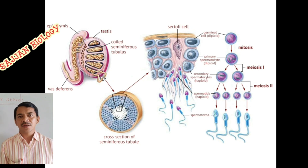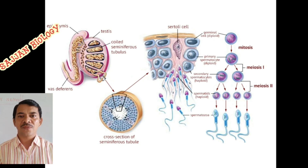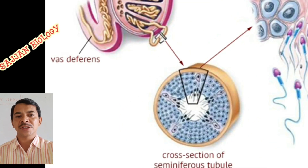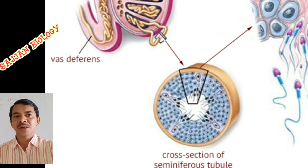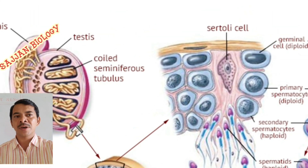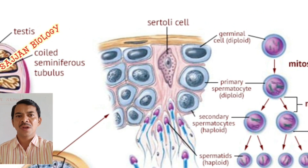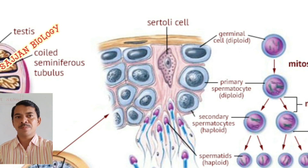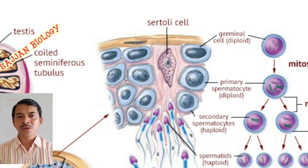Here you can see the complete explanation of a part of a seminiferous tubule. Inside the cross section of seminiferous tubules you can see the wall is associated with spermatogonial cells or germinal cells in a diploid condition. These diploid cells undergo meiosis to produce haploid gametes — that is, primary spermatocyte, secondary spermatocyte, spermatids, and spermatozoa are produced.